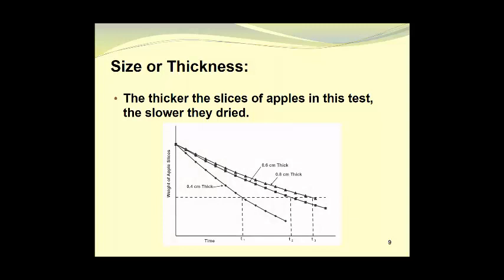In this diagram you can see apples with thicknesses ranging from 0.4 cm thick to 0.8 cm thick. Following the line for the 0.4 cm thick apples, we can see that they reached a certain weight in less time than the 0.8 cm thick apples. This is because in the case of the 0.8 cm thick apples, the water had to travel further to the surface to be removed than it did in the thinner slices.